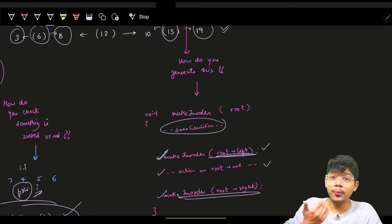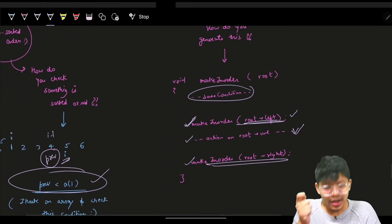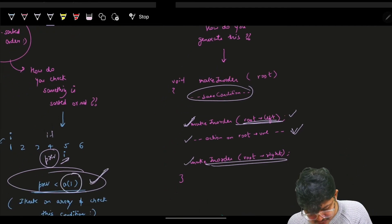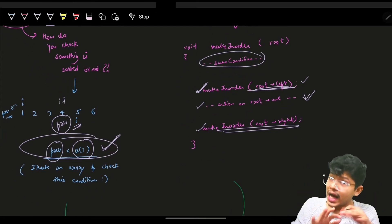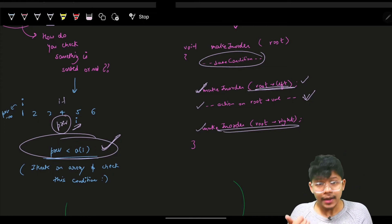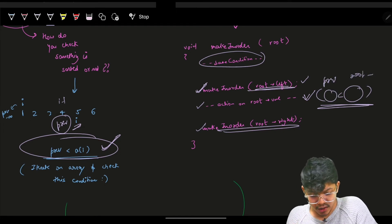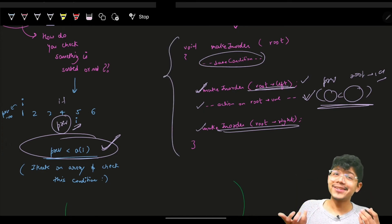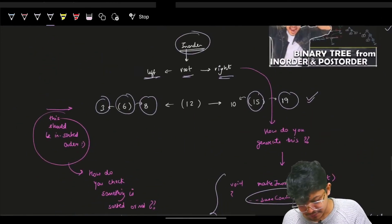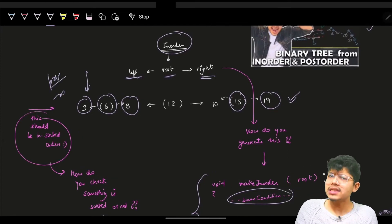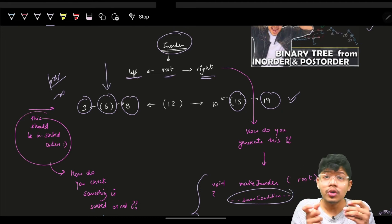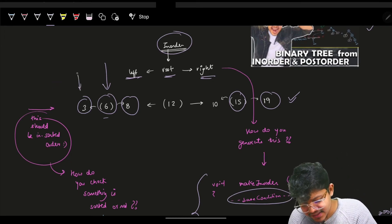At the operation step in in-order traversal, we compare root value with the previous value. In the very beginning, the previous value is minus infinity, so we can represent it as null. Before moving on to the next node, we assign the previous pointer to the current node, because the traversal is incremental.